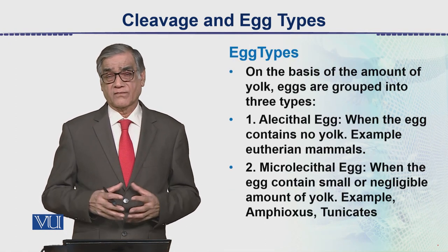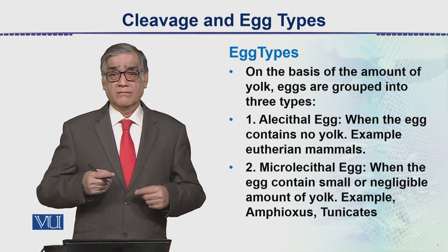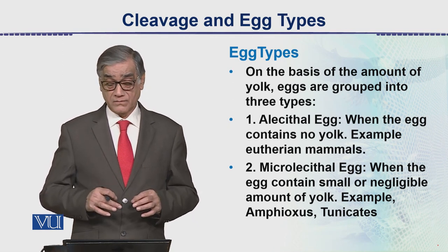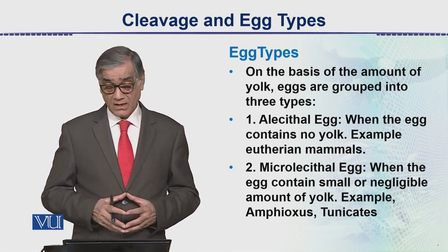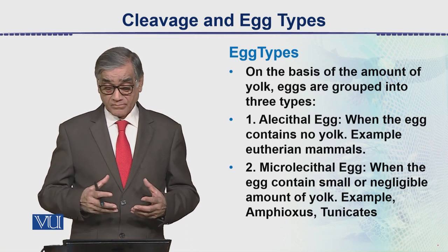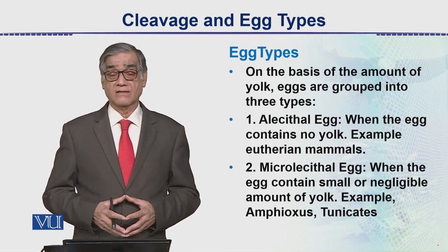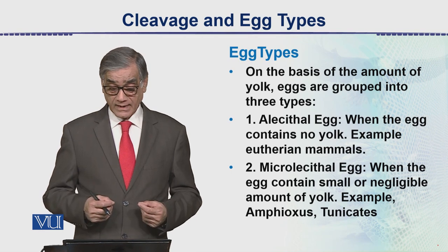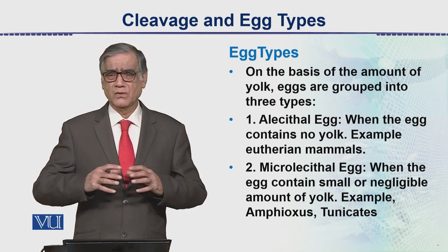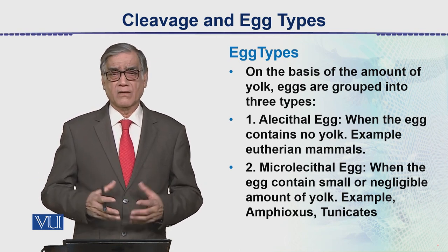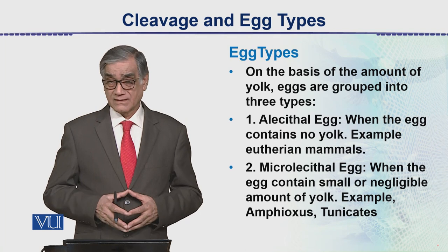There are different types of eggs — eggs are not always the same. We can classify them in terms of the amount of yolk and the placement of yolk. On the basis of the amount of yolk, eggs are grouped into 3 types. First is the alecithal egg — alecithal egg means when the egg contains no yolk, or if it does it is a very little amount of yolk. Examples are eutherian mammals.